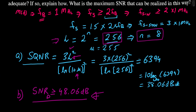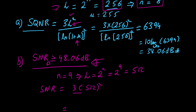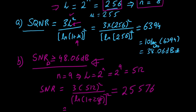Previously the quantization levels were 256, based on n = 8 bits. If we increase the number of bits to n = 9, the quantization levels become L = 2^9 = 512. The SQNR would then be 3 × 512² / [ln(256)]² ≈ 255,576, which is approximately 44 dB — not a 10 dB increase from 38 dB, so this is insufficient.